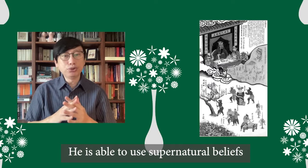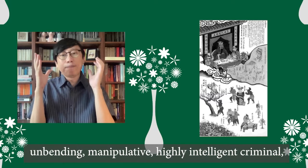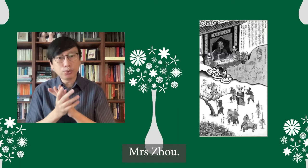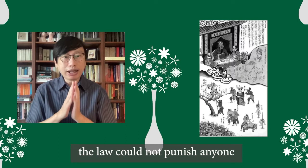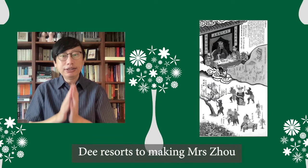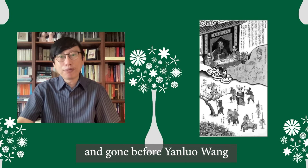Dee's grounds of human psychology give him an edge at outwitting his opponents. He is able to use supernatural beliefs to prey on the minds of an otherwise unbending, manipulative, and highly intelligent criminal, Mrs. Cho. In ancient China, the law could not punish anyone without a full confession of the crimes. Dee resorts to making Mrs. Cho believe that she has died and gone before Yan Lo Wang in order to extract her confession.